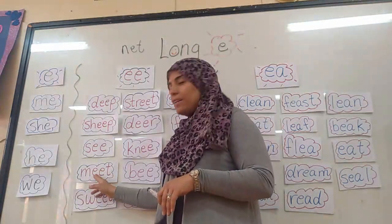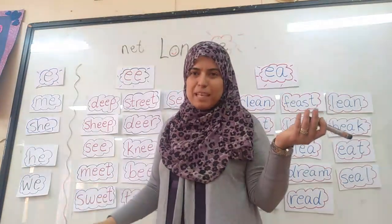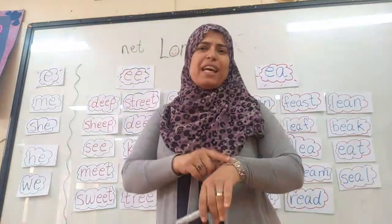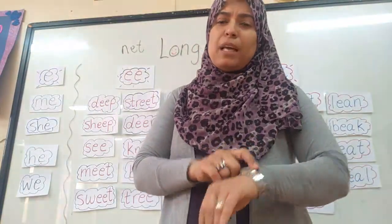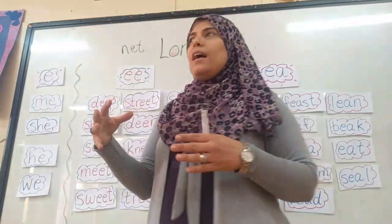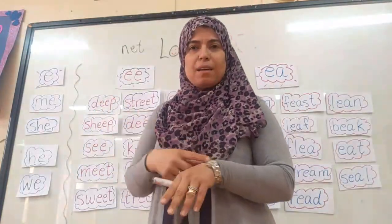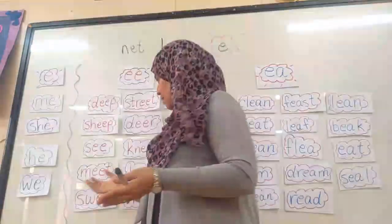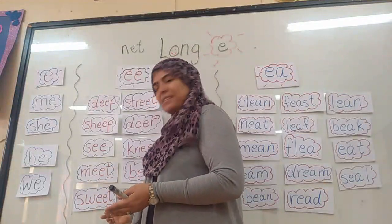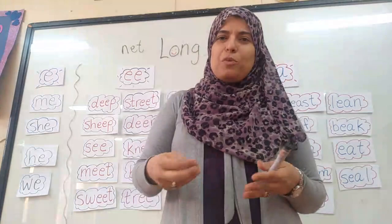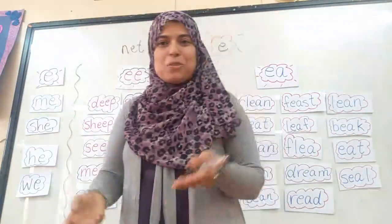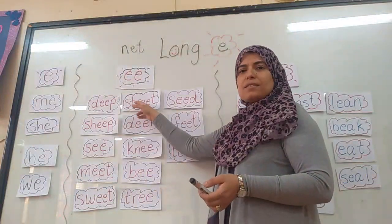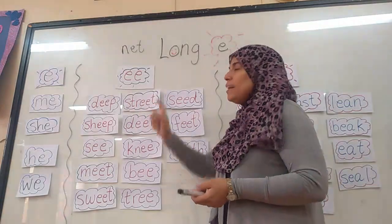I have the word 'meet' with double E and another word 'meat' with E-A. Meet means to be with someone — to make a time to go with someone somewhere or to be together in the same place. For example: let's meet together, or I cannot meet you, I am busy today. Then S-W-E-T: sweet. Something sweet — like in Ramadan we eat kunafa and ataif, and this is something sweet, like chocolate.